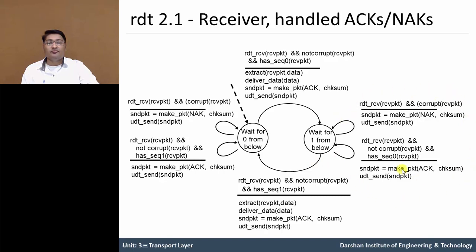Similar events and actions apply for sequence number 0 and sequence number 1. Using this protocol we resolve errors in acknowledgement and negative acknowledgement control packets during sending and receiving transmission. In the next video we will discuss RDT version 2.2, in which only the acknowledgement packet is used.